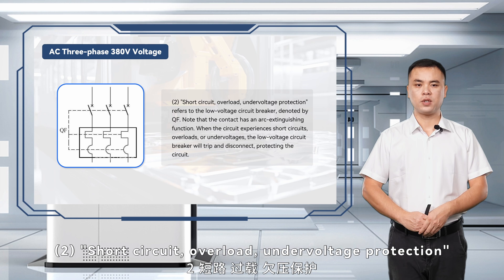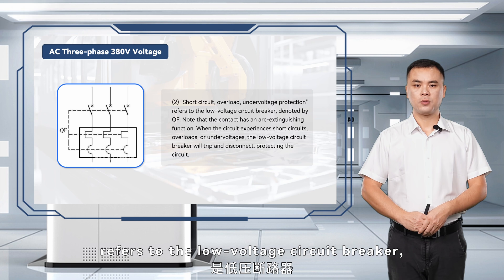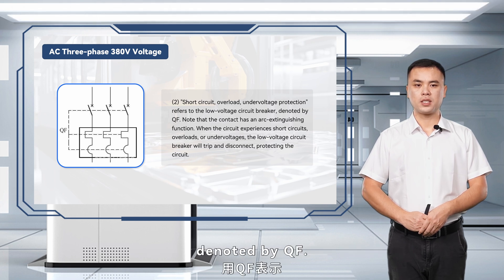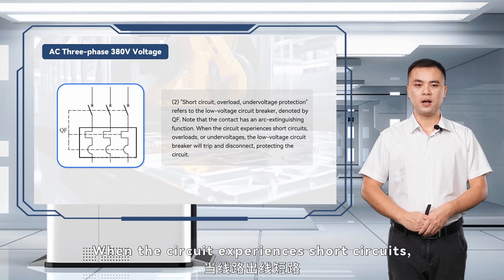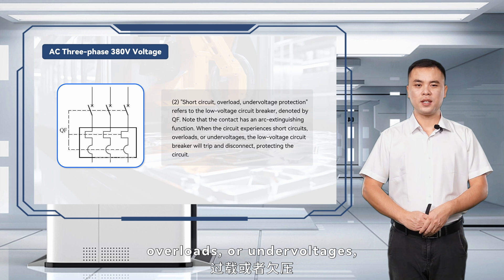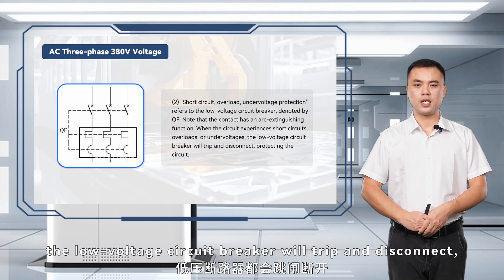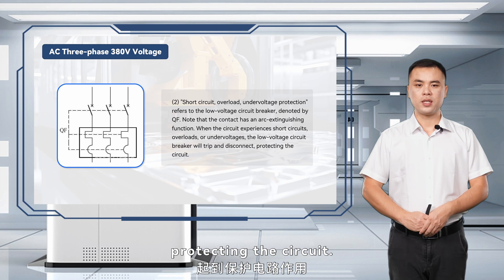Component 2: Short-circuit, overload, and under-voltage protection refers to the low-voltage circuit breaker, denoted by QF. Note that the contact has an arc-extinguishing function. When the circuit experiences short circuits, overloads, or under-voltages, the low-voltage circuit breaker will trip and disconnect, protecting the circuit.